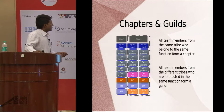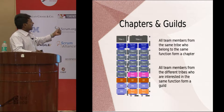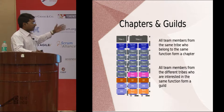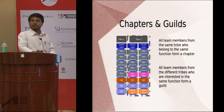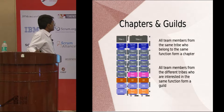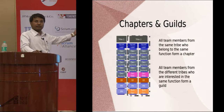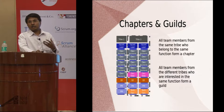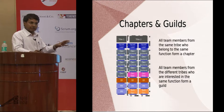Chapters and guilds: all team members from the same tribe who belong to the same function form a chapter. All team members from different tribes who are interested in the same function form a guild. For example, the dev web members across squads within a tribe form a chapter with a chapter lead, while the QEs across different tribes form a guild. They share information and the latest technological updates, and have a slightly different reporting structure.